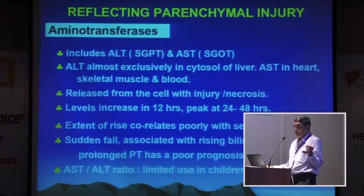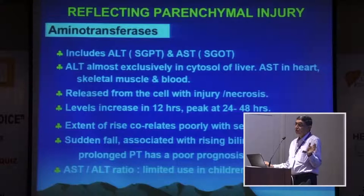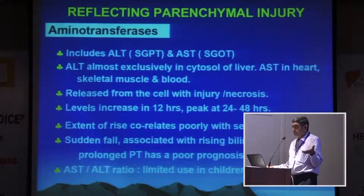A sudden fall in ALT associated with rising bilirubin and prolonged prothrombin time has a poor prognosis. Normally when ALT falls, bilirubin should also fall and prothrombin time should normalize. If ALT falls but the other two are prolonging, it means hepatocytes have necrosed and the enzymes are caught up in that necrosed area. The AST/ALT ratio is widely used in adults for alcoholic liver disease; in children, we use it only for Wilson's disease.